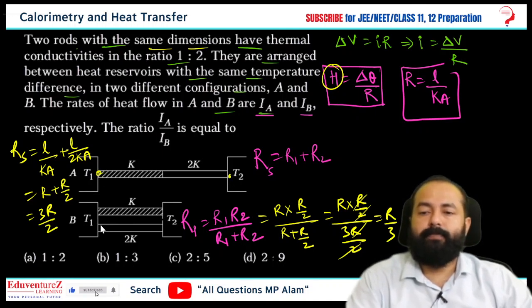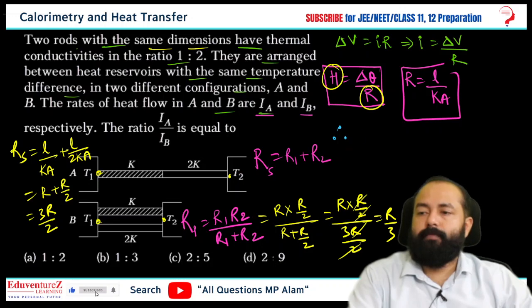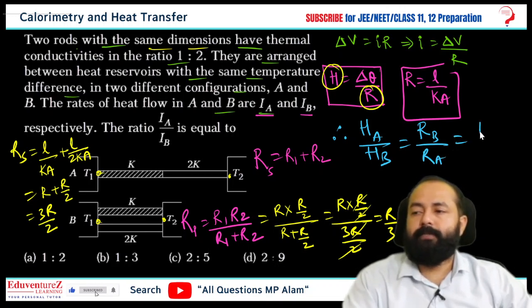Therefore we can say H in the first condition upon H in the second condition is equal to resistance in the second by resistance in the first, reciprocal. So here RB's value, meaning in the second condition, is R by 3, and in the first condition is 3R by 2.